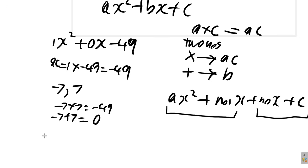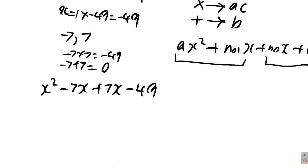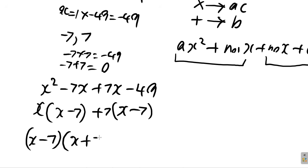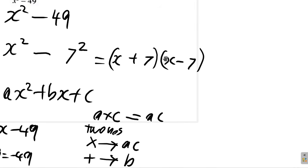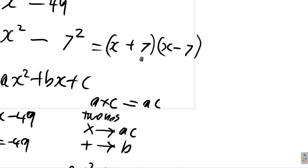So you have 1x squared minus 7x plus 7x minus 49. Factorizing in groups: x times (x minus 7) plus 7 times (x minus 7). Since x minus 7 is a common factor, you put it out: (x minus 7)(x plus 7). So you get x minus 7 times x plus 7 — the same as with the shortcut.